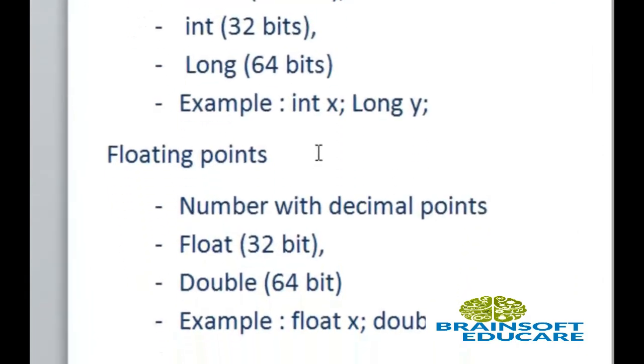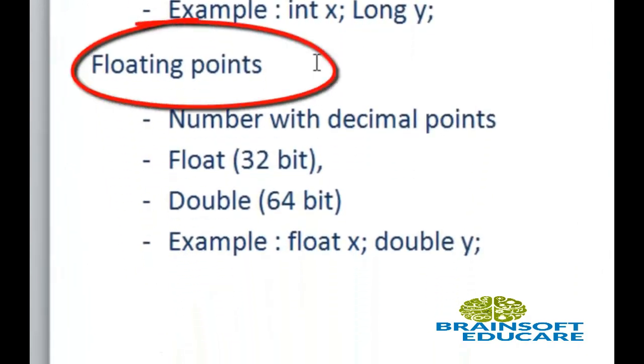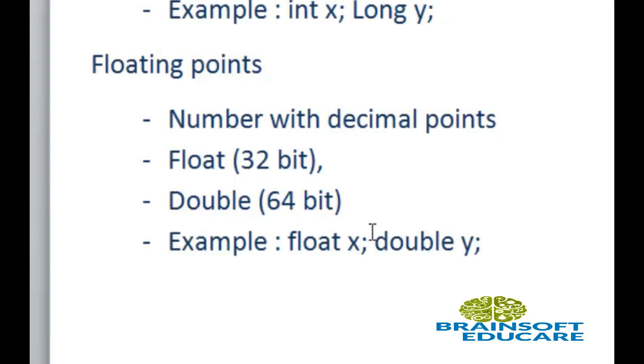Next, floating points. Floating point is used to represent numbers with decimal points. It contains float and double data types. Float occupies 32-bit space, while double occupies 64-bit memory space. Here is the example of float variable.